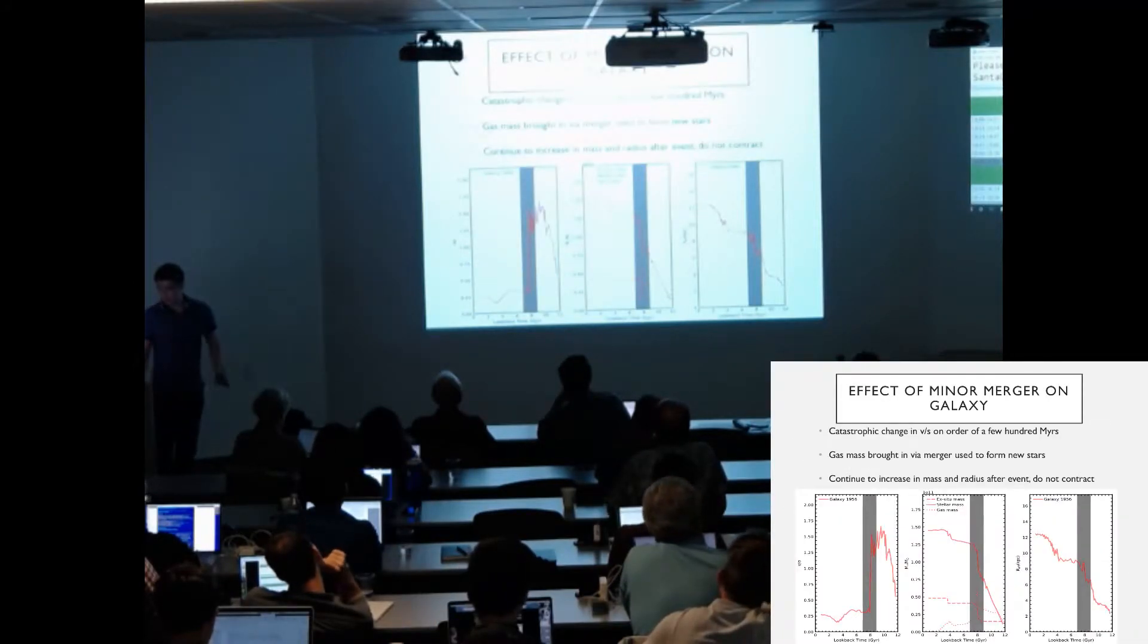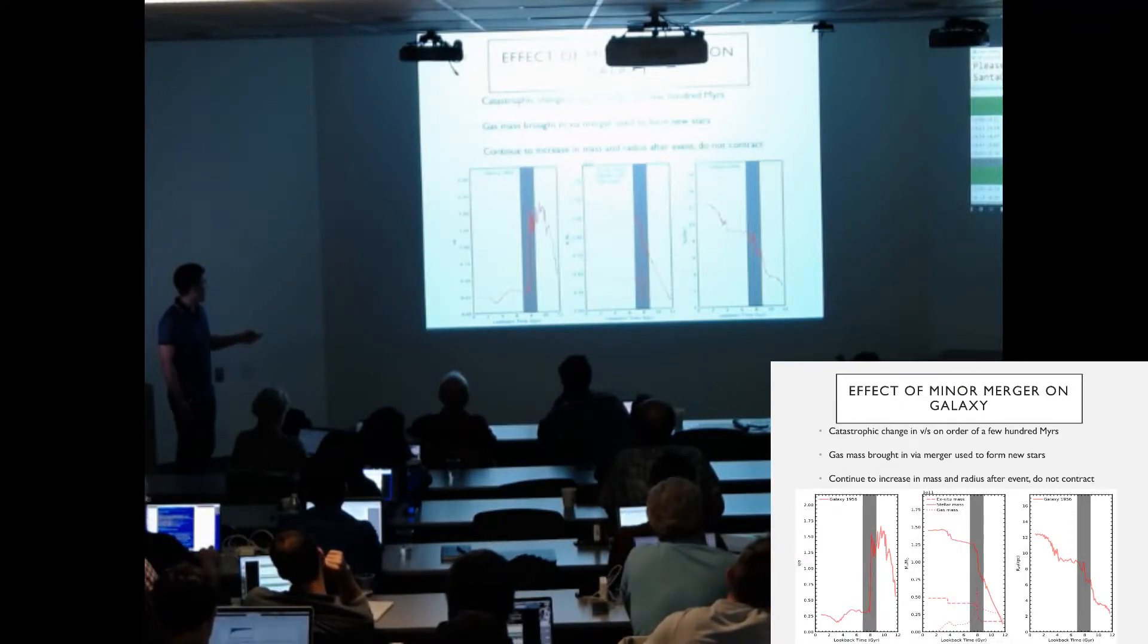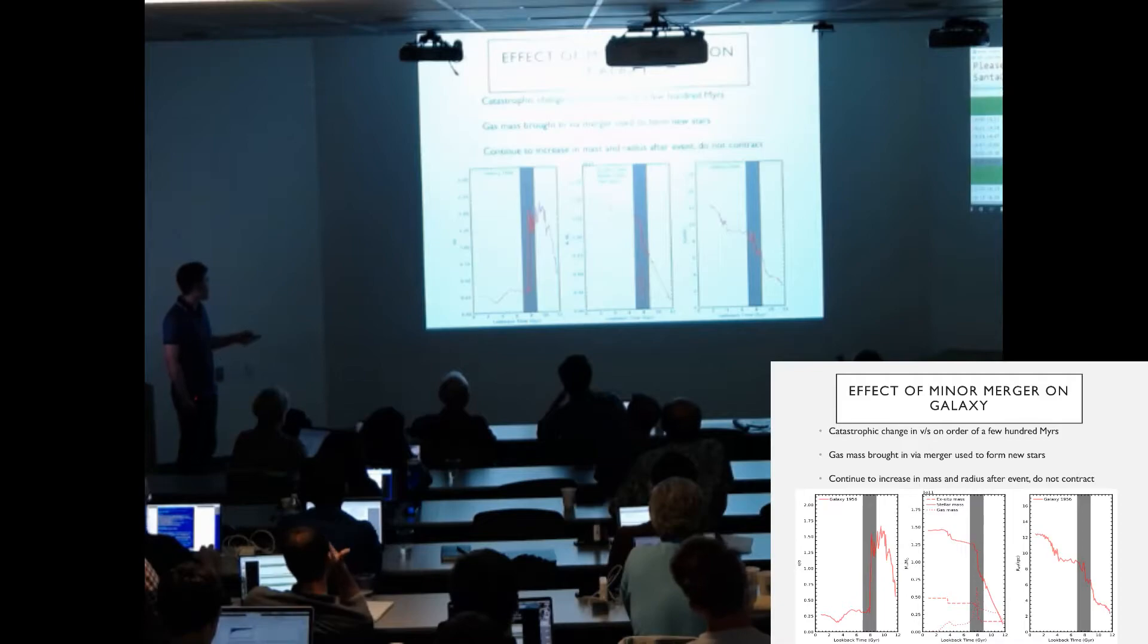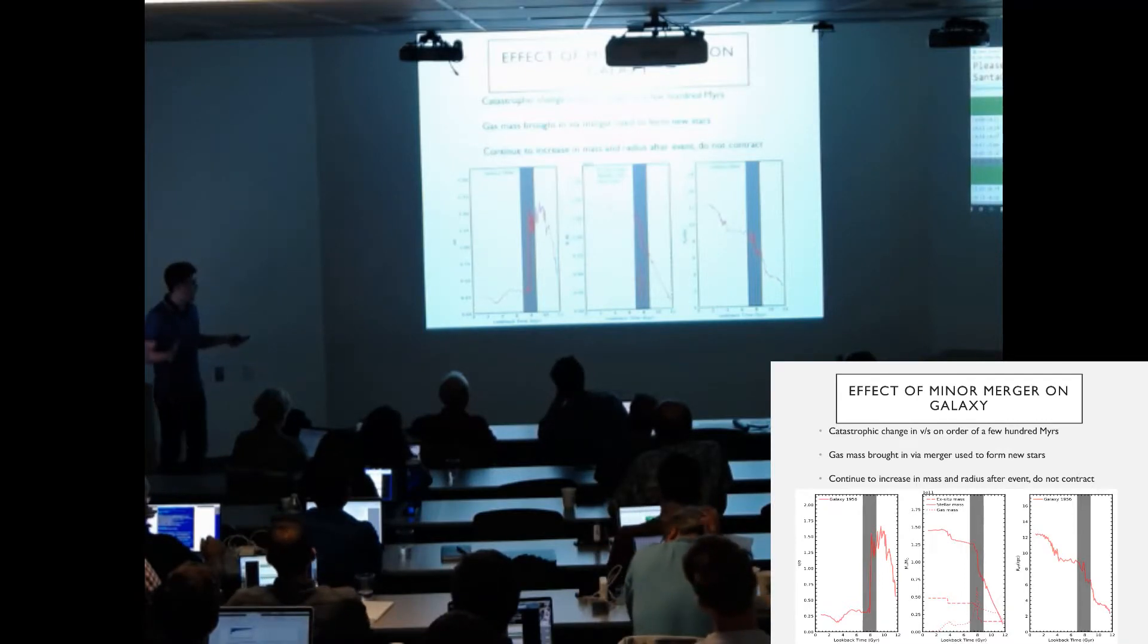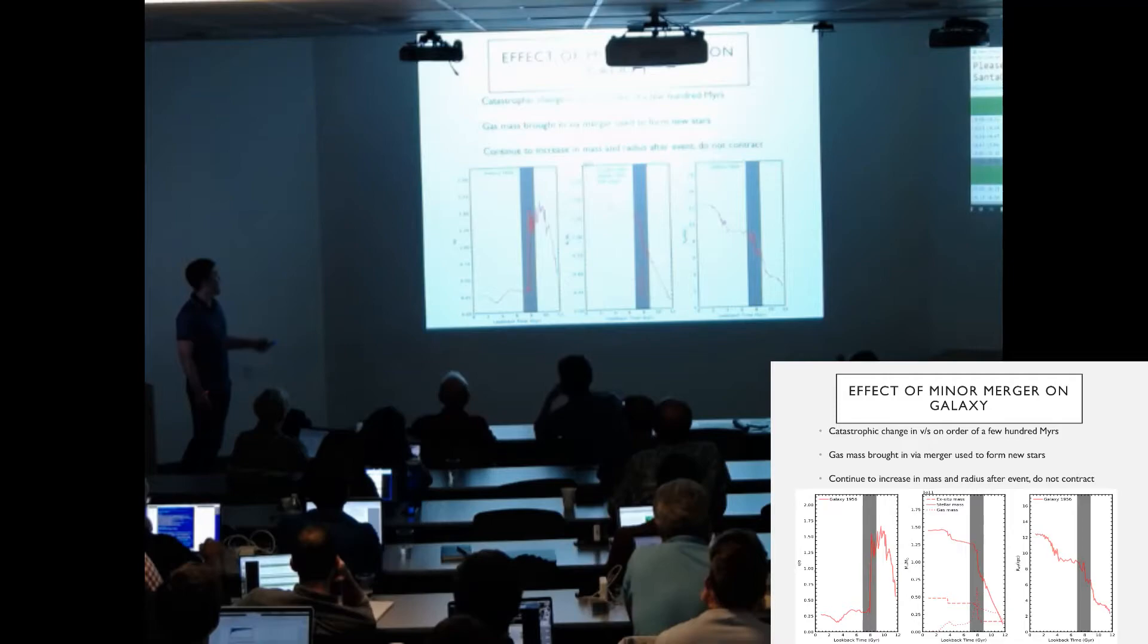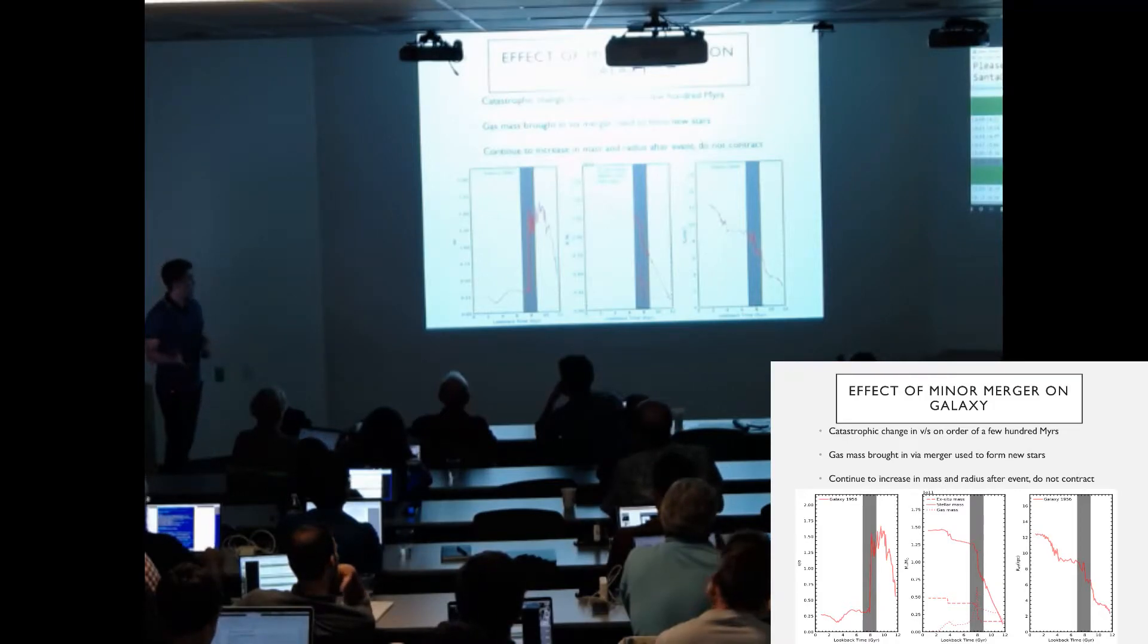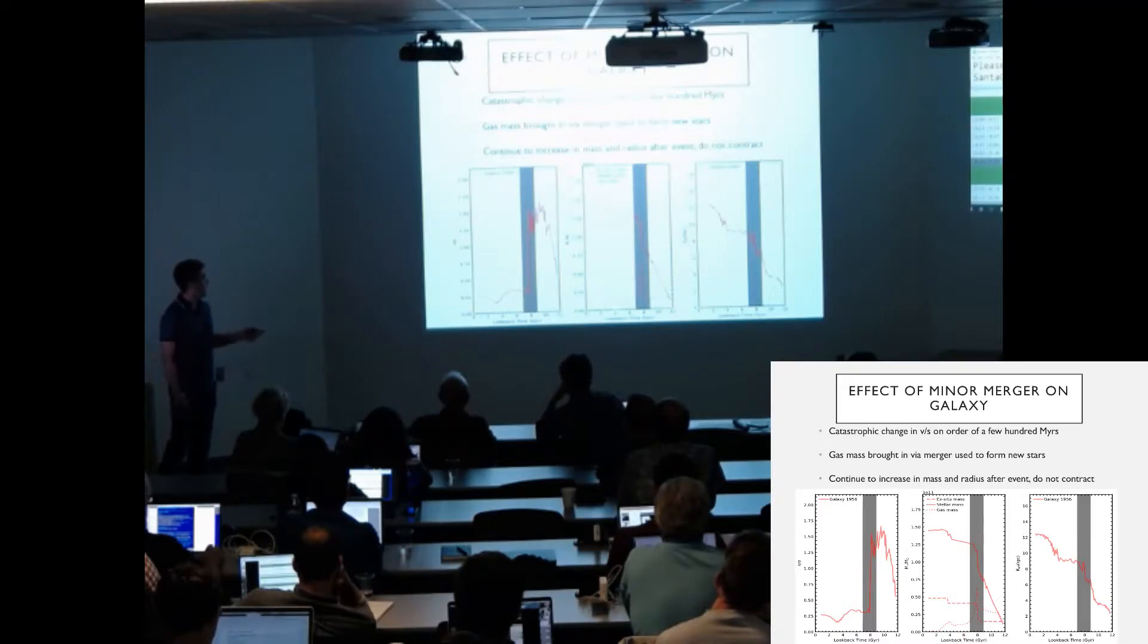So what's the effect of the minor merger on the galaxy itself? Well in these three plots, this grey region here shows where the merger takes place. The graph on the left shows the evolution of the V over sigma in the main progenitor. The one in the middle, here we have stellar mass as it changes over time. We have ex situ mass, which is accreted onto the main progenitor, and the gas mass of the main progenitor itself. And this final plot here shows the effect of radii as it changes over time in the main progenitor. In all of our galaxies, we see a catastrophic change in V over sigma that is permanent after the merger has taken place, and it takes place on the order of a few hundred megayears. This is followed by a sustained period of significant star formation. And unlike in minor merger triggered disk instabilities, we find that these galaxies don't contract. They actually continue to increase in size and in mass.